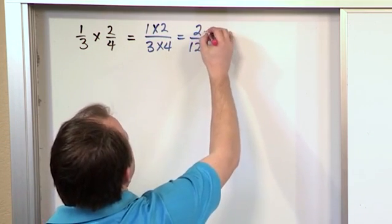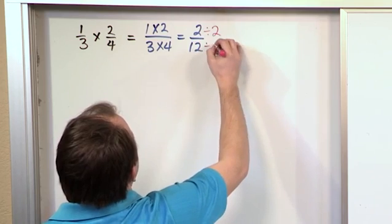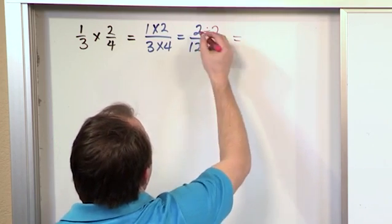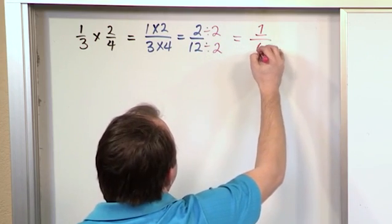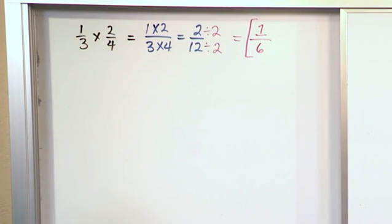And we can because we know both of these are even. We can divide the top by 2 and the bottom by 2. 2 divided by 2 will be 1. 12 divided by 2 will be 6. And so the answer for this problem is 1/6.